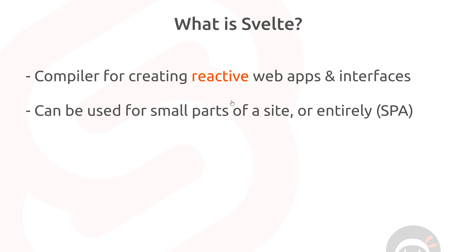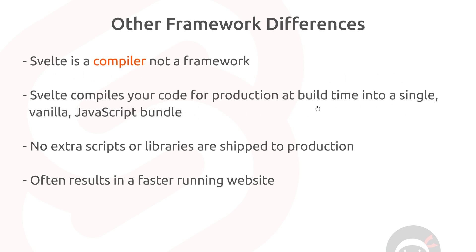Although we have these similarities, there are differences between Svelte and React, Vue, and things like Angular. That is primarily because Svelte is actually a compiler and not a framework, and there is a difference. Svelte compiles your code for production at build time into a single vanilla JavaScript bundle, and that's the only thing we deploy with our website to control it.